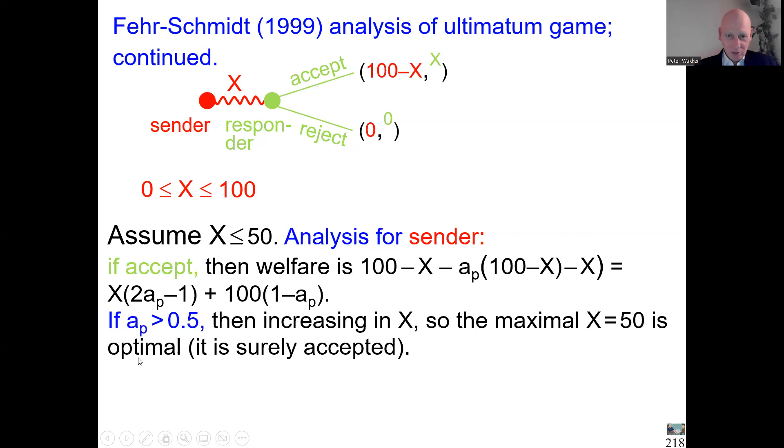If a_p is bigger than 0.5, so the sender is very social, really strongly dislikes being ahead, then we can see that this term is in fact positive. So then this is increasing in X. Then the sender, as long as we are below 50, increasing how much is sent to the responder is increasing the happiness in case of acceptance. But of course, it also increases the probability of getting accepted. This maximal 50 that you can achieve gives the maximum happiness, but that also gives a sure acceptance. So if this sender is very socially oriented, that will surely happen. 50 will be sent, will be accepted. And that's the outcome, 50-50 of the game, a fair outcome.